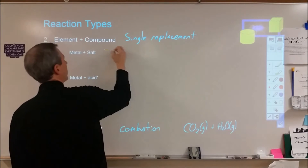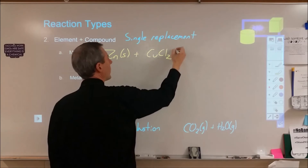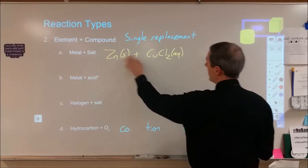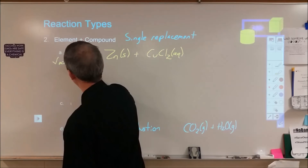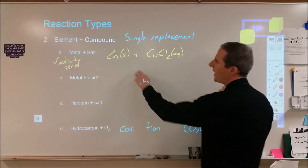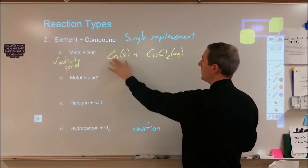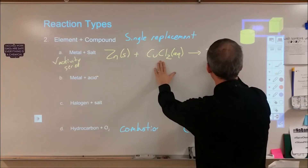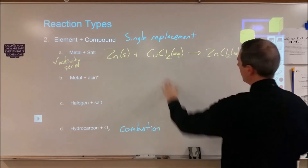Let's say we're looking at zinc metal mixed with copper(II) chloride in water. The solid zinc won't dissolve but the copper chloride will. We check our activity series to know if this reaction will happen. Zinc is the more reactive element of the two, so it's going to end up in the compound form. In this case, we turn zinc and copper chloride into zinc chloride — which is aqueous — and copper solid. Then we balance as well.